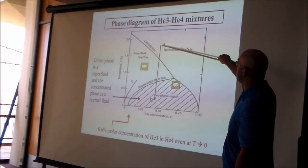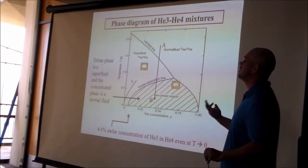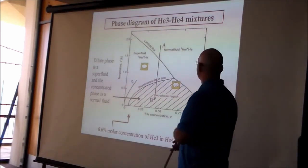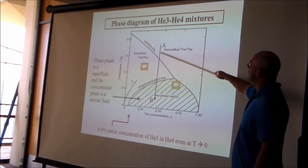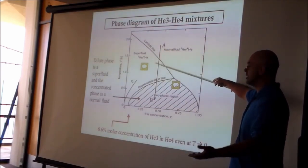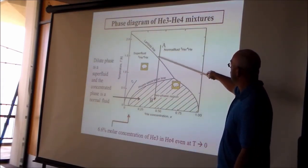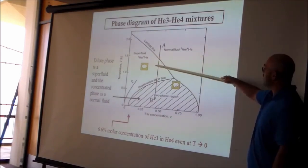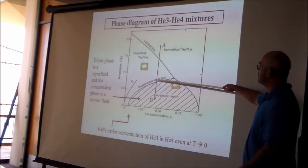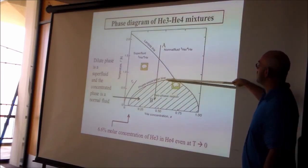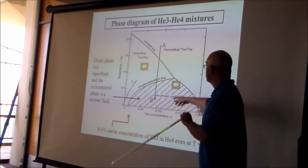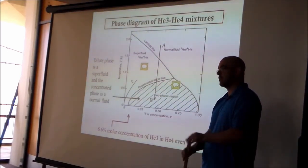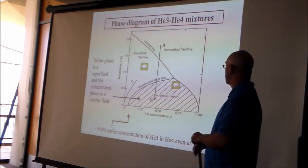Starting at point A — a high-temperature normal liquid — helium-3 and helium-4 are uniformly spread out. Decreasing the temperature, once you cross the lambda line, the helium-4 starts to Bose condense into a superfluid. Cooling further, you reach a point of phase separation: helium-3 physically separates and sits on top of the helium-4. This lower-entropy state makes sense as the system orders itself.